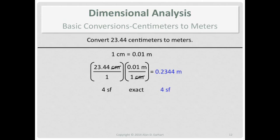Since this is a one-step conversion, we do have a common sense check. We've got 23.44 centimeters, which is a tiny unit, much smaller than a meter. There are a lot of centimeters in a meter, so if we go up to a larger unit, the number has to get smaller. And 0.2344 is smaller than 23.44.